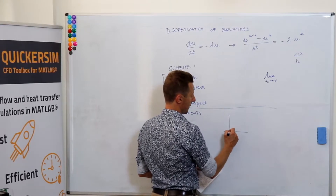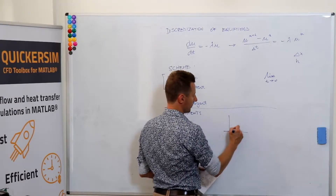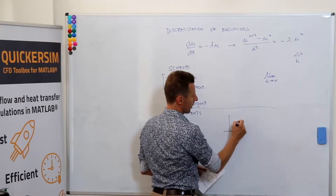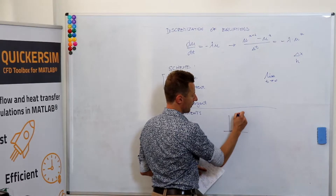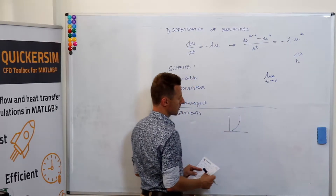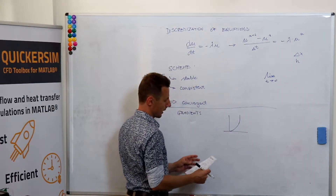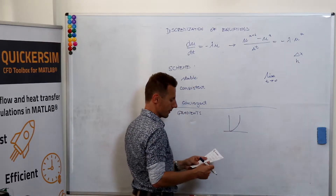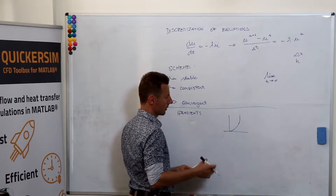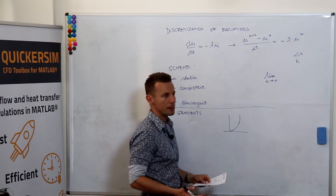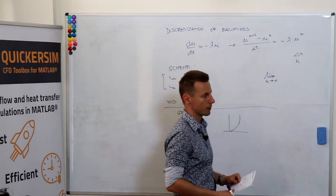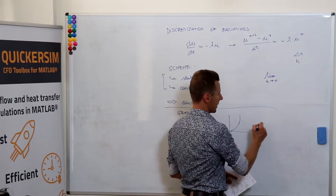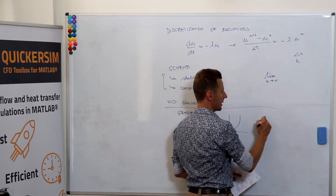Let's take the example of the boundary layer. You know that the velocity distribution in the boundary layer looks like that. Now, there are many, many physical quantities that are represented by gradients.